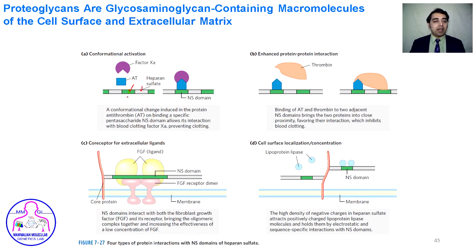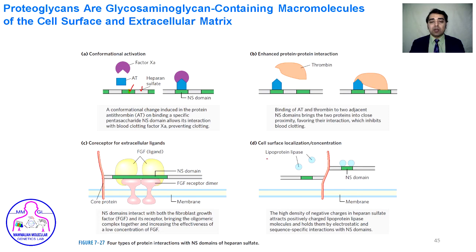Heparin binds to antithrombin through its NS domain, which then attaches blood clotting factor Xa, thus preventing blood clotting. Heparin sulfate also helps in protein-protein interaction: the NS domain attaches to both antithrombin and thrombin at different NS domains, bringing the two proteins into close contact. The NS domain of heparin sulfate also binds to both FGF ligand and its receptor, facilitating receptor-ligand binding, and helps localize lipoprotein lipases through the NS domain.